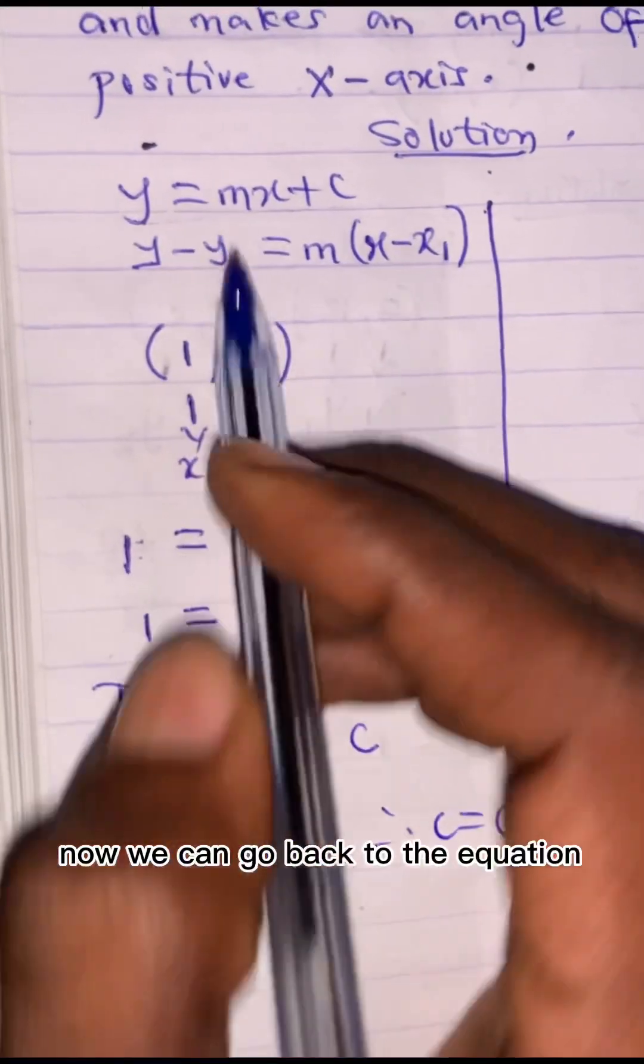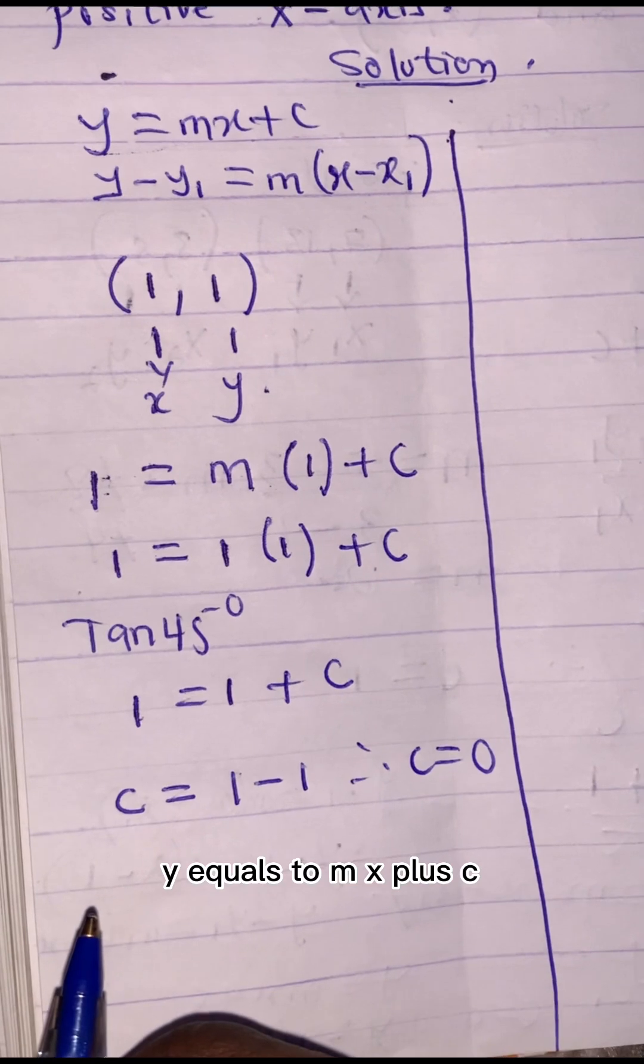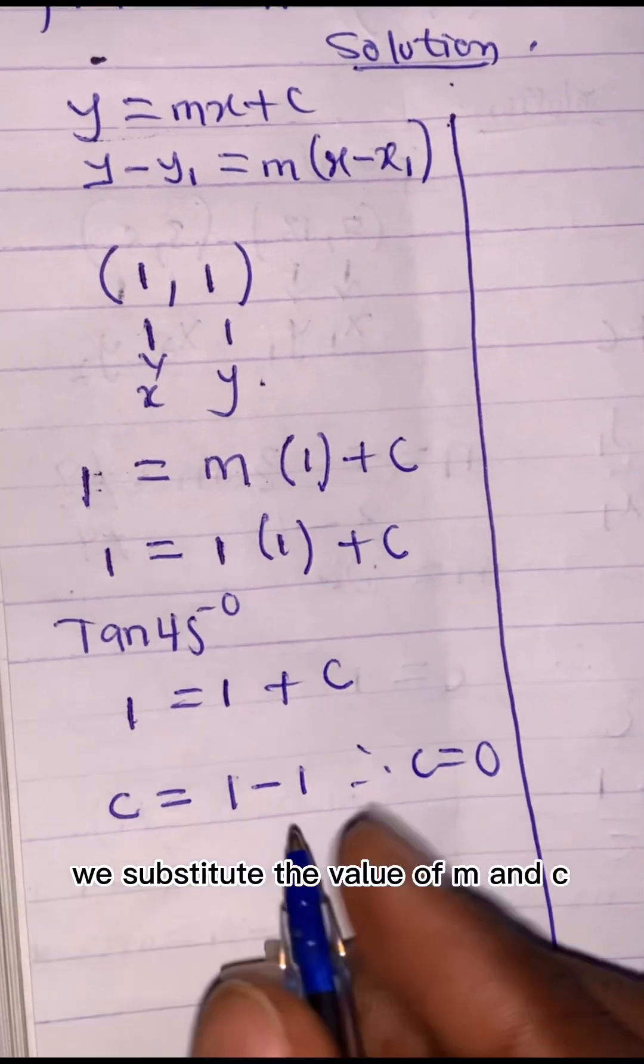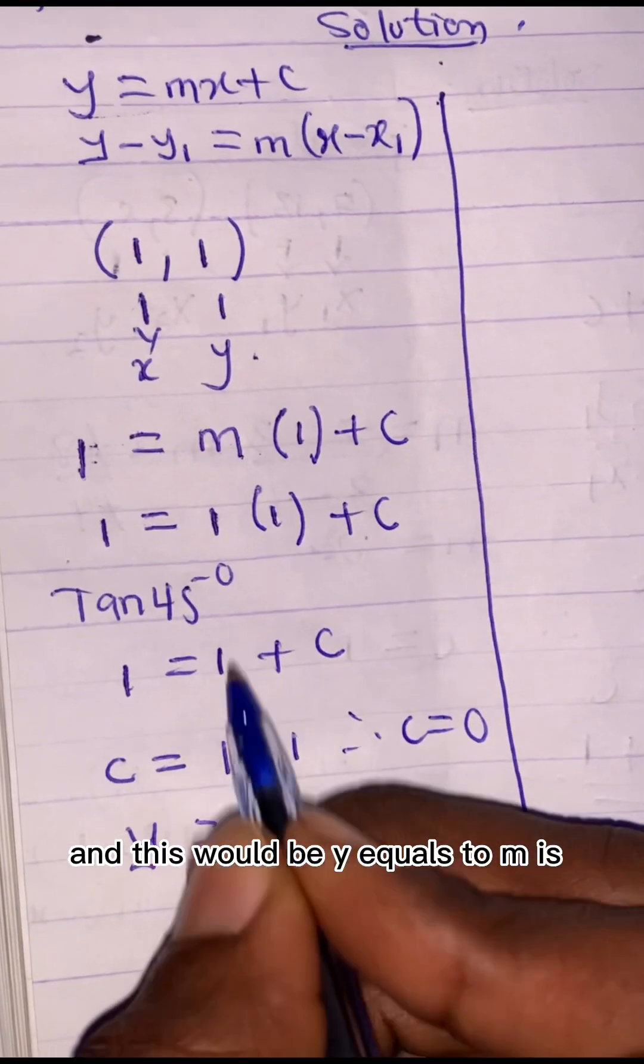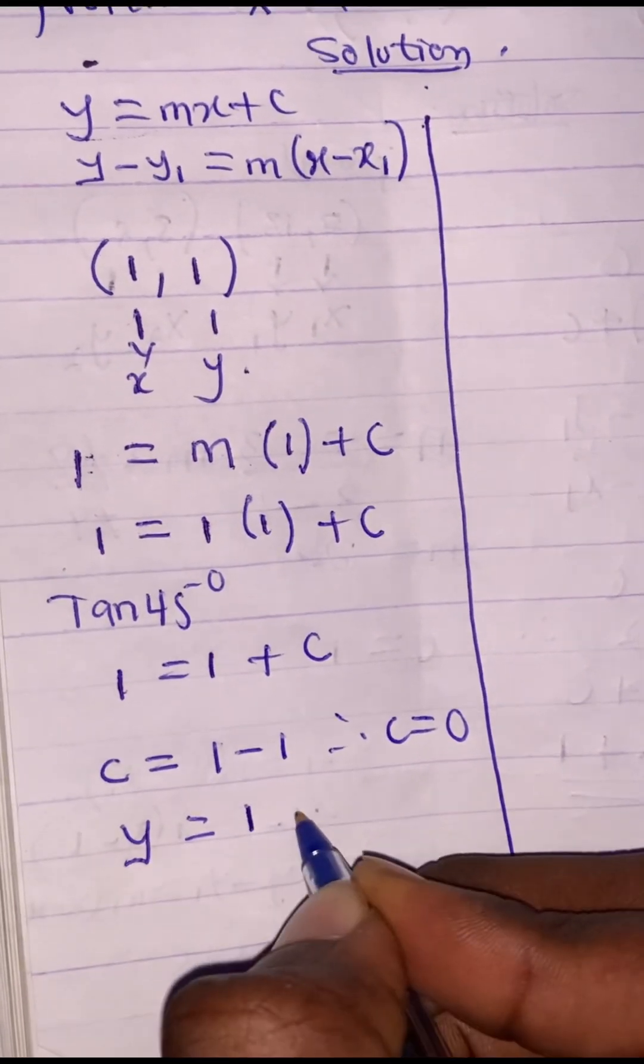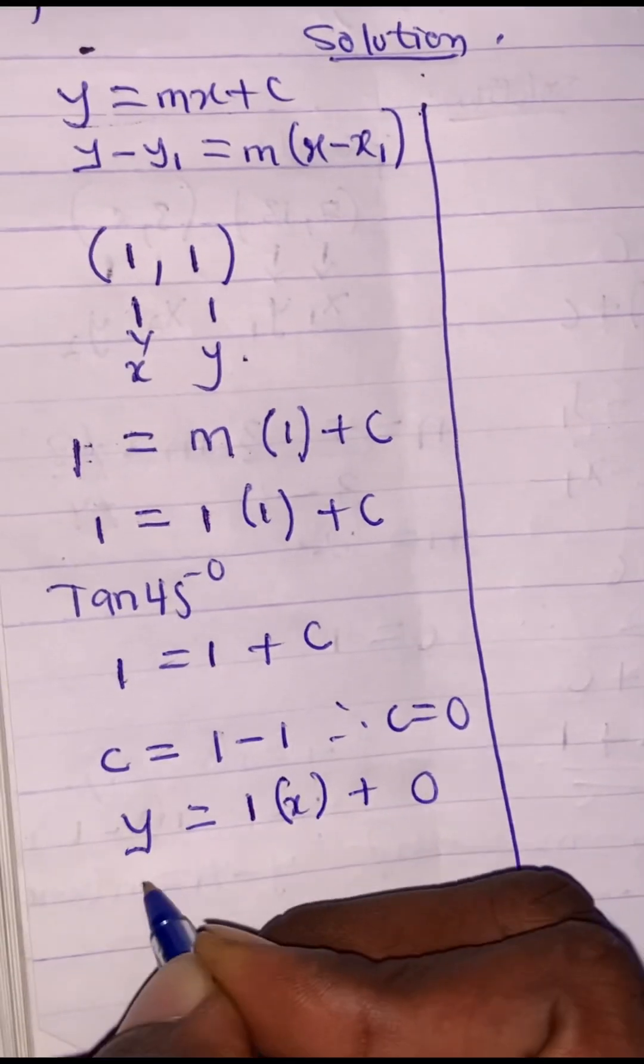So now we can go back to the equation we used, y = mx + c. We substitute the value of m and c. And this would be y = m is tan 45, which is 1 into x plus c is 0. Therefore